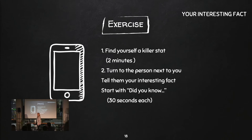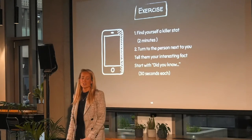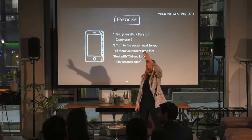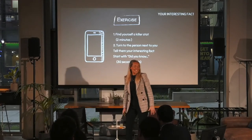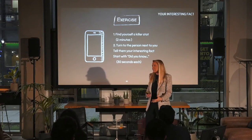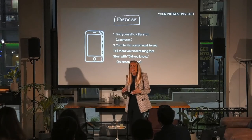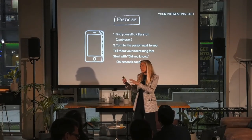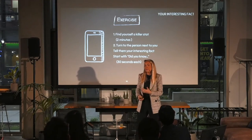You should have got your killer stat. Next, turn to the person next to you. Start with 'Did you know?' and tell them your killer stat. Thirty seconds each, very quick, then switch. You're so engrossed in this — you don't want to stop talking. And that's it — it's why our friends are our friends, because we find them interesting. They bring something new and exciting to the table. We're learning all the time, and they put that knowledge into perspective for us.